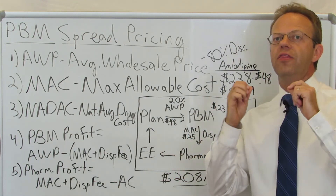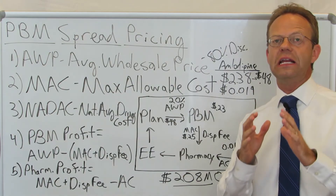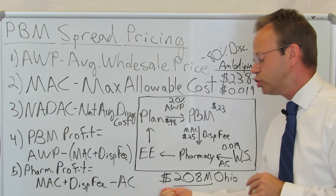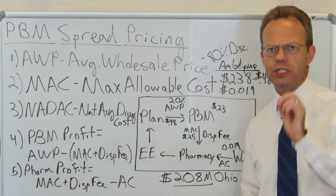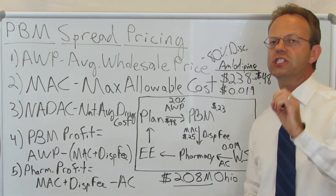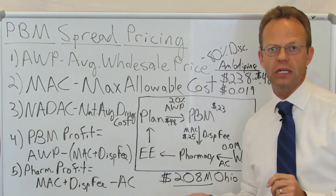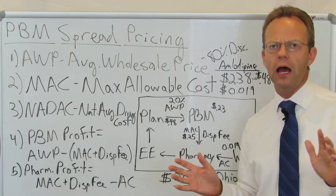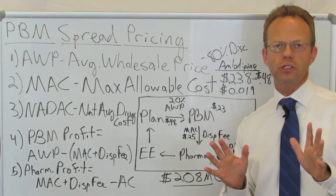This specific situation is exactly what happened to the State of Ohio Medicaid program, and that spread pricing cost them $208 million just on their generic pharmacy spend — not on their brand, not on their specialty pharmacy. Just their generic pharmacy spend alone cost them $208 million. It was in the Columbus newspaper a lot — the articles are fantastic, and I encourage you to read them.